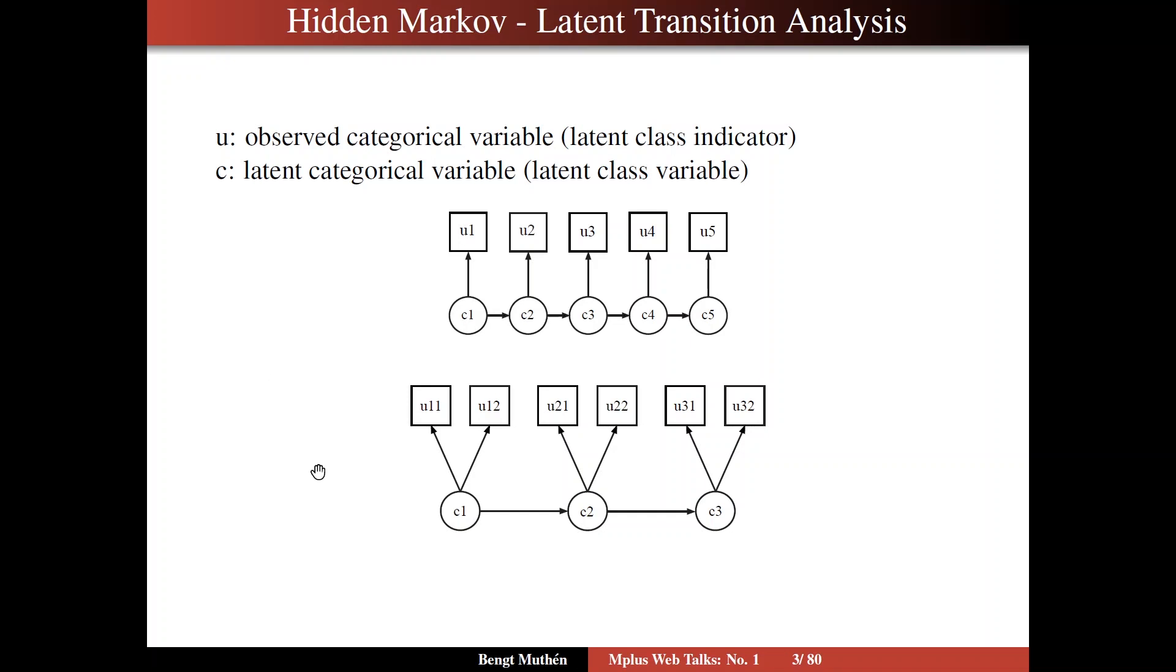Latent transition analysis, on the other hand, considers several measurements, several indicators of the latent class variable per time point, in this case two. And it typically considers fairly short time series, two or three time points, as in this case, maybe a maximum of five.